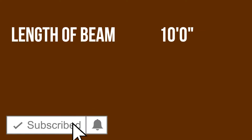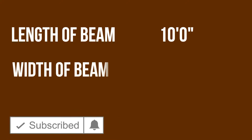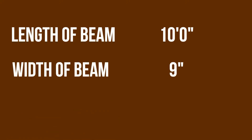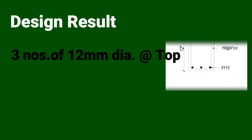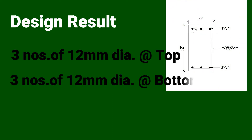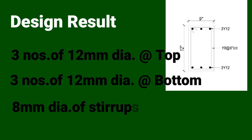Here I assume a length of beam is 10 feet, width of beam is 9 inches, and height of the beam is 12 inches. Also the design result of the beam is 3 numbers of 12 mm dia bars at bottom and top. The stirrup dia of the beam is 8 mm, and the center to center spacing of stirrups is 6 inches.